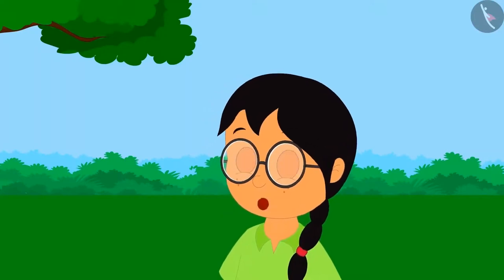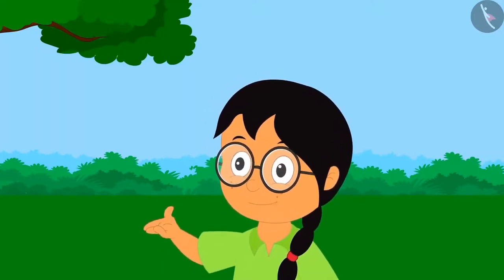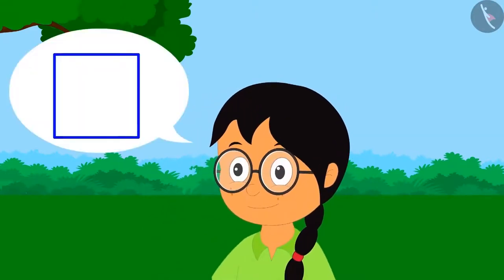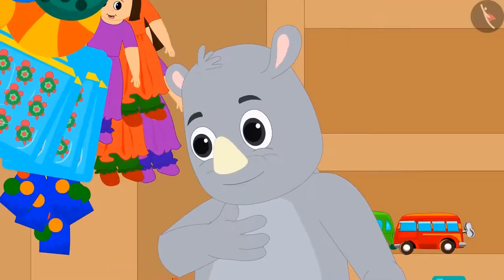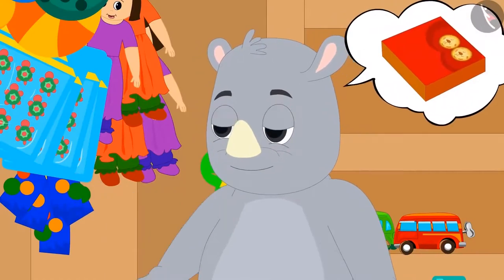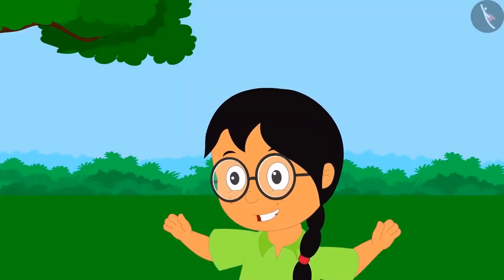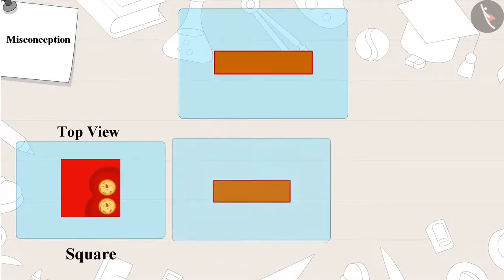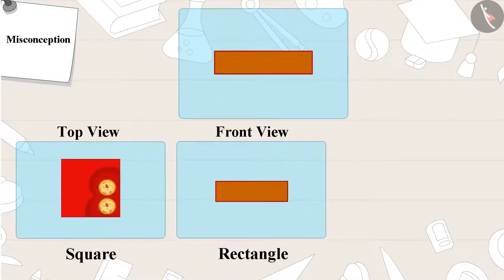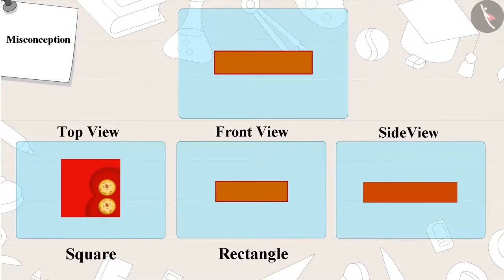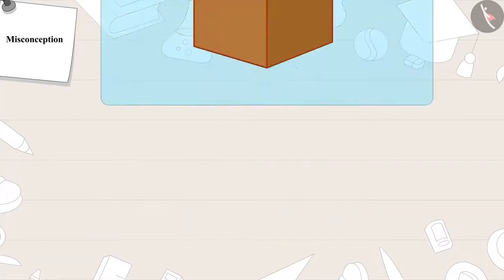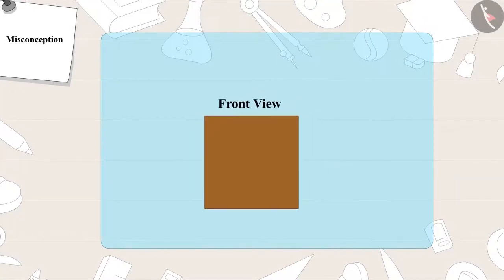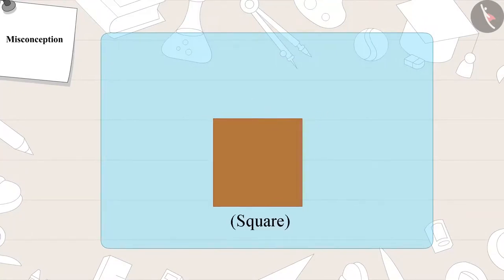My second riddle: which object is a square from top view, front view, and side view? Gaggoo replied: it is a rectangle — my good friend Appu's confectioner's sweet box! A sweet box is a square in top view, but in front view it is a rectangle, and even in side view it is a rectangle. The correct answer is a box of chalks. A box of chalks is a square in top view, front view, and side view.